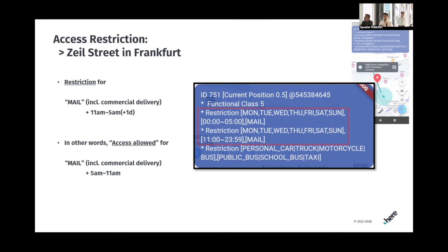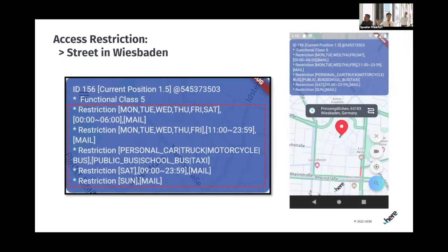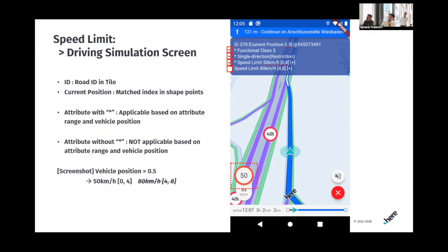There are even more complicated cases using NDS live. The attributes can be really flexibly grouped, representing various restrictions or attribute combinations. The next topic is speed limits. As Philippo and Boris mentioned, ISA is one of the hot topics in Europe.